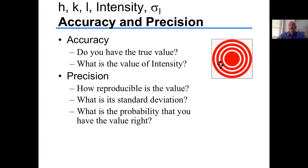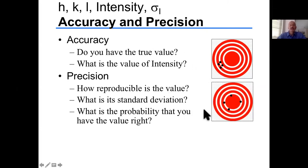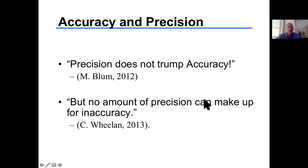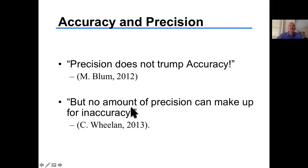Accuracy is whether you have the true value; precision is how reproducible it is. For example, people wearing shoes have a systematic error in height measurement. For difficult phasing problems, precision does not trump accuracy. You could have one absolutely accurate measurement for every HKL and solve the structure, but fantastic precision going to the wrong number won't help. As Charles Wieland put it: no amount of precision can make up for inaccuracy.